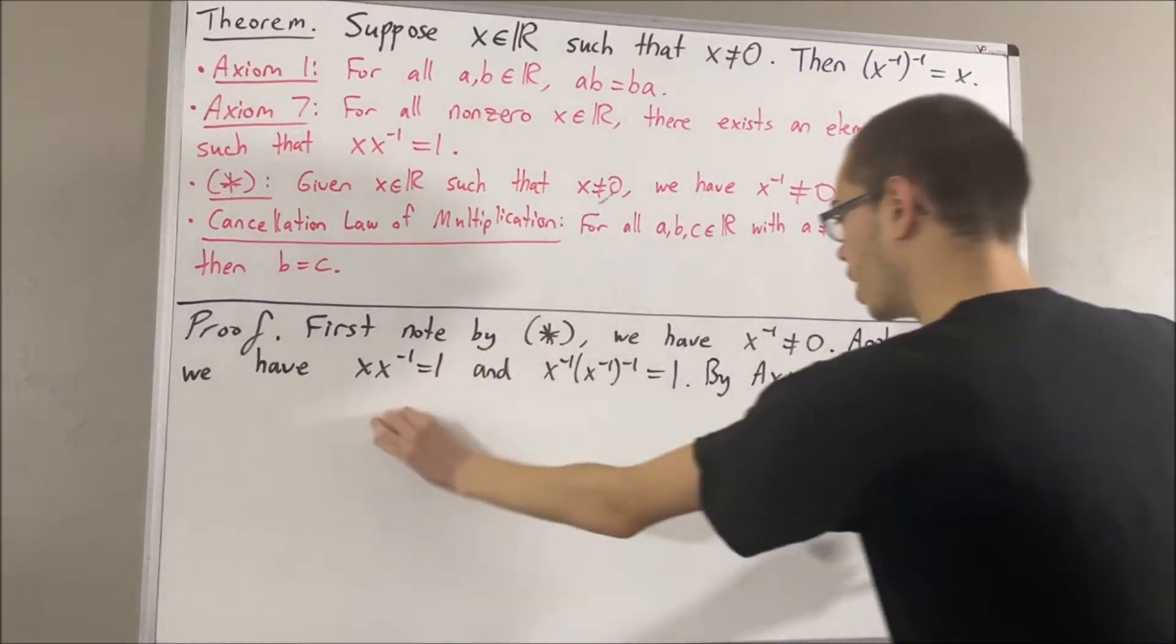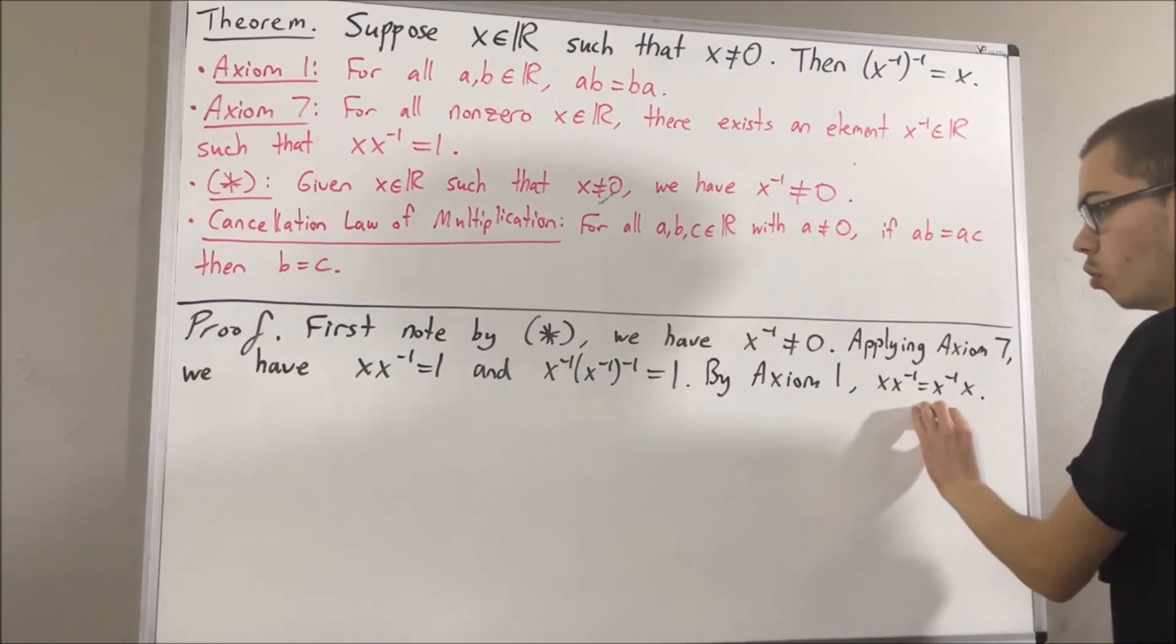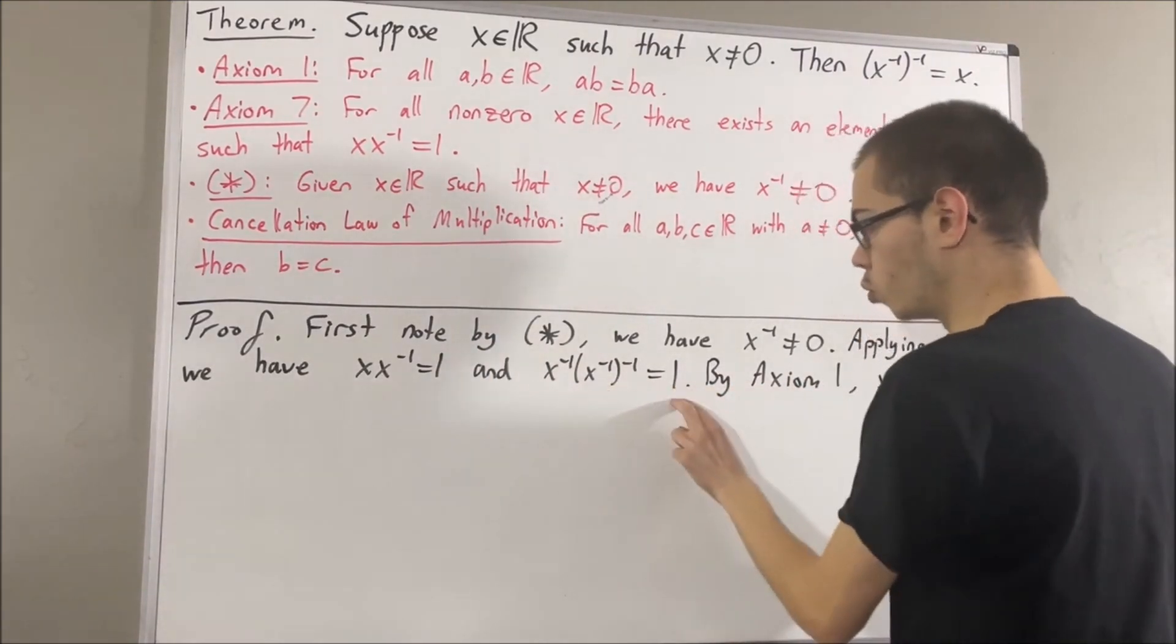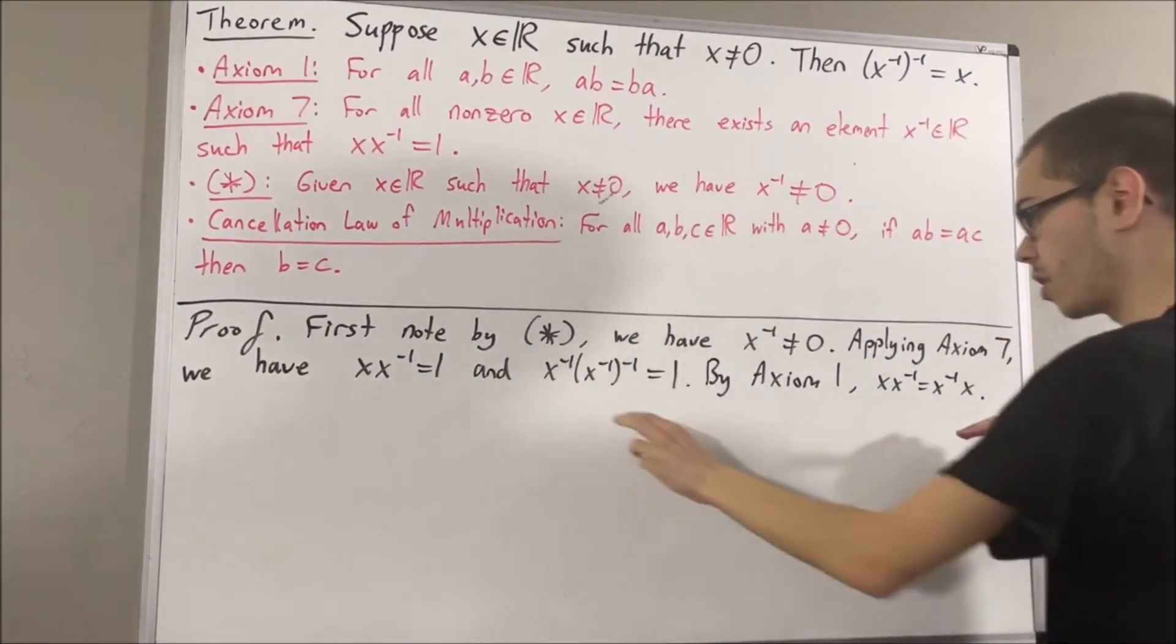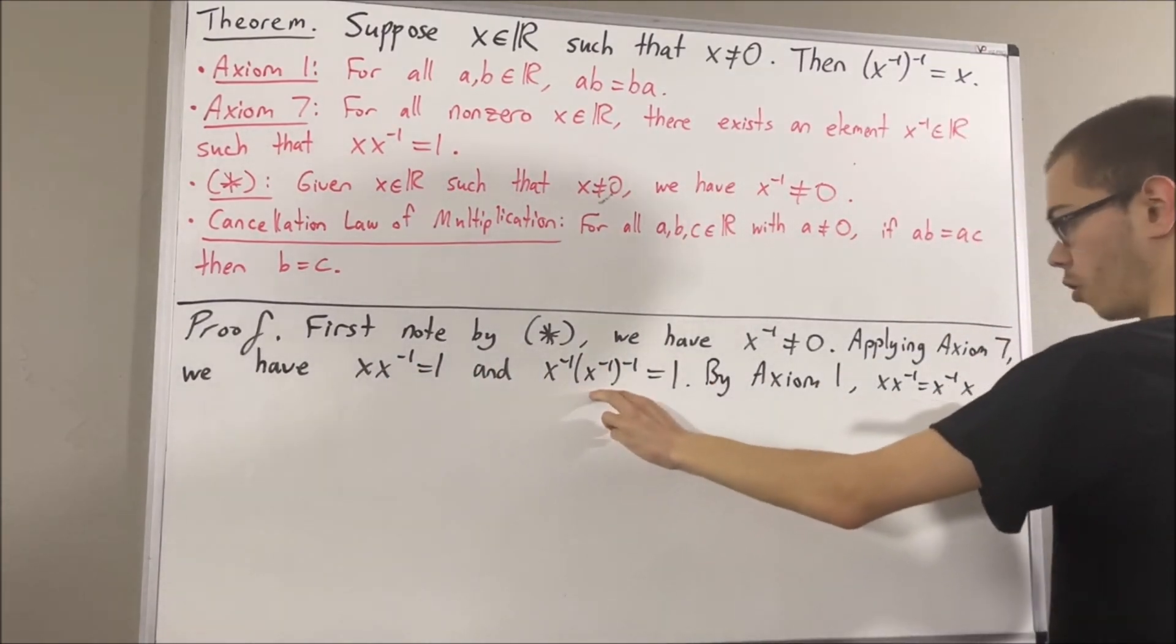And now, putting these three equations together, we have that this is equal to 1, which is equal to this, which is equal to this. So, that tells us that these two are equal.